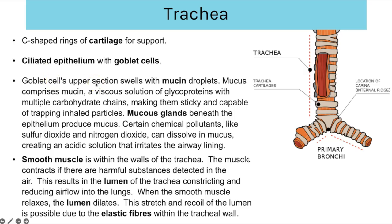Goblet cells' upper sections swell with mucin droplets. Mucus comprises mucin — a viscous solution of glycoproteins with multiple carbohydrate chains — making it sticky and capable of trapping inhaled particles such as dust or pathogens. Mucus glands beneath the epithelium also produce mucus. Certain chemical pollutants like sulphur dioxide and nitrogen dioxide can dissolve in mucus, creating an acidic solution that irritates the airway lining. Smooth muscle within the tracheal walls contracts when harmful substances are detected, constricting the lumen to reduce airflow and protect the lungs. When the smooth muscle relaxes, the lumen dilates, and this stretch and recoil is possible due to elastic fibres within the tracheal wall.